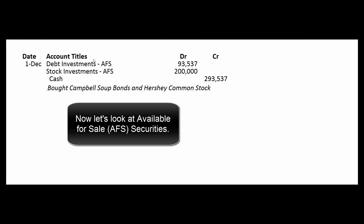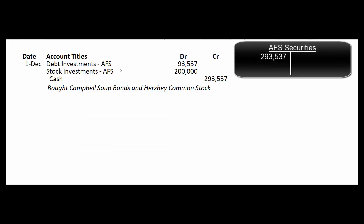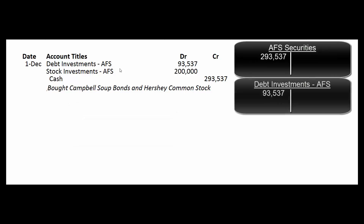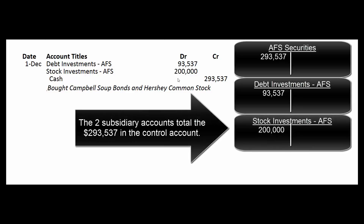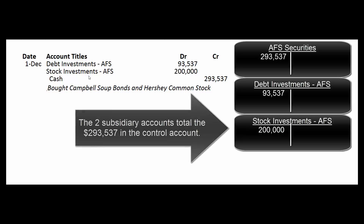Now let's change the facts. On December 1st, we buy some Campbell Soup bonds for $93,537 and some Hershey Company stock for $200,000. Think of a control account called Available-for-Sale Securities, with sub-accounts for debt investments and stock investments. Unlike trading securities — where we claimed we could actively buy and sell for profit — available-for-sale means we're not trading actively. We had extra cash, got tired of earning half a percent in our bank account, so we invested in stocks and bonds of other companies.